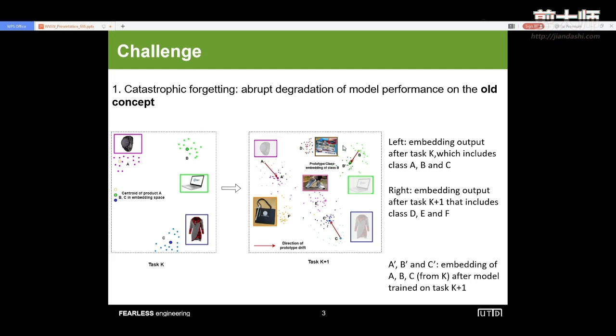The first challenge, we call it catastrophic forgetting, means the abrupt degradation of the model performance on old concepts when the model tries to learn new categories during the continual learning scenario. Take this online product learning system as an example. The left figure shows that after the model learned on task K, which includes class A, class B, and class C, the output embedding in the feature space. The right one shows the embedding output after the model learned on task K plus one, which introduced the new categories D, E, and F. We could see that in this new feature space, the embedding output of the old concepts A, B, and C have different degrees of shifting in this new learned feature space.